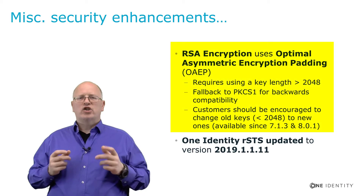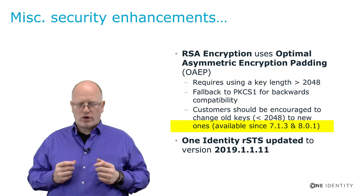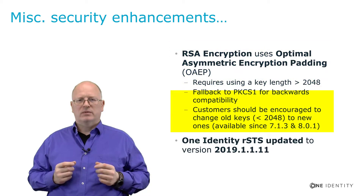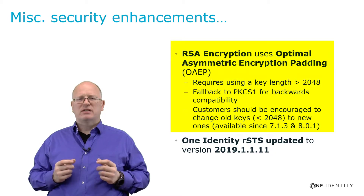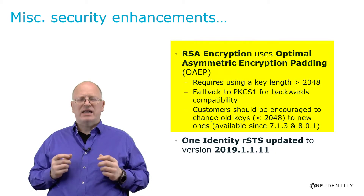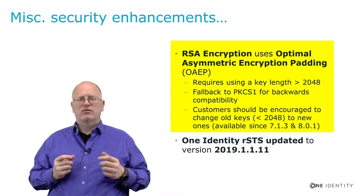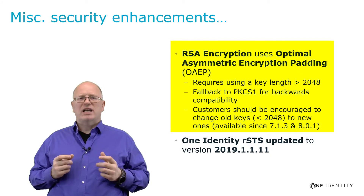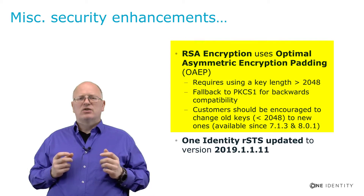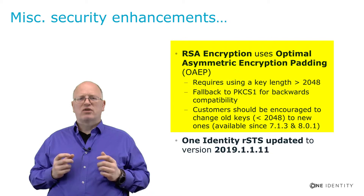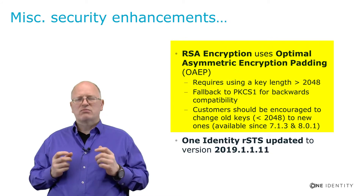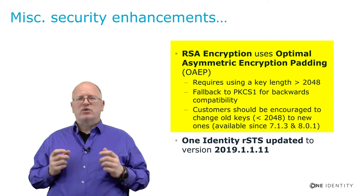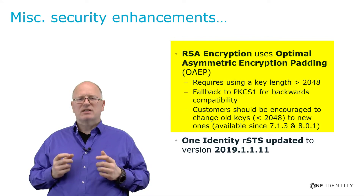On the security side, we changed something with versions 7.1.3 and 8.0.1. We increased the capability of the system to use an RSA encryption key. This key was, prior to those versions, a 1024-character long encryption key. As we now know, 1024 characters is not secure enough — it is possible to use machines to decrypt that through a large number of calculation processes. So it was necessary to increase that key size, which happened in those named versions 7.1.3 and 8.0.1.